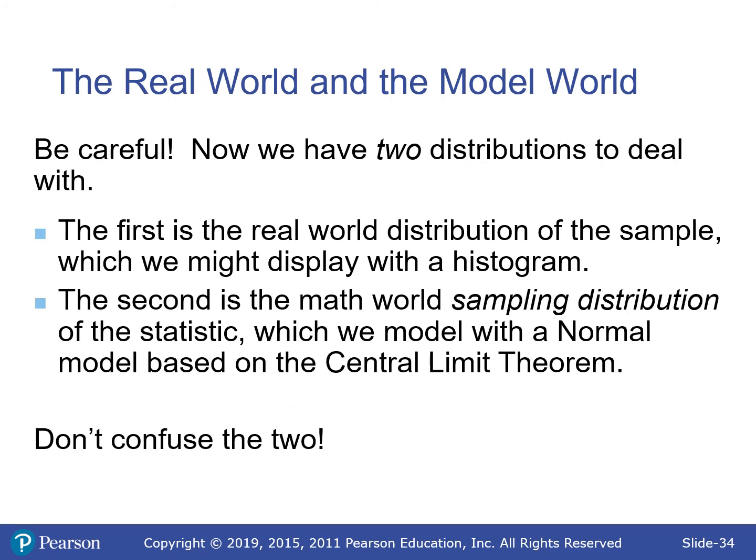Now we have two distributions to deal with. The first is the distribution of a sample — made with histograms — which is what we've been doing all year, looking at individual values. The second is the sampling distribution, where we take a sample, find the mean or proportion, and that statistic is the data point. It's a distribution of a whole bunch of samples, modeled with the normal model because of the CLT.